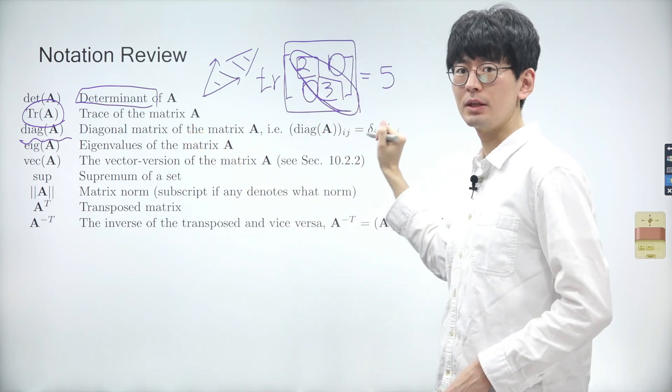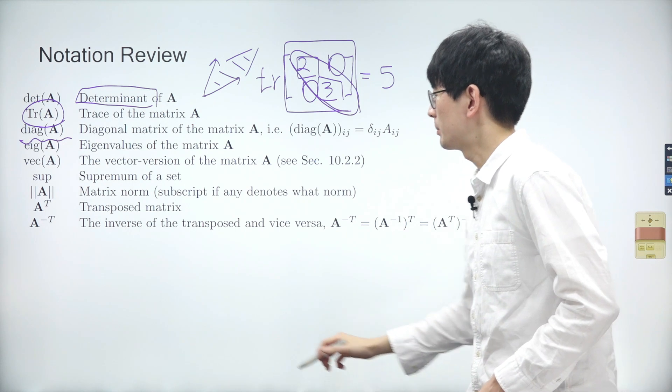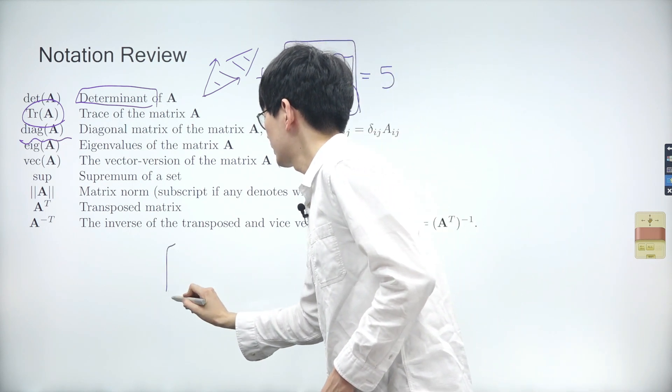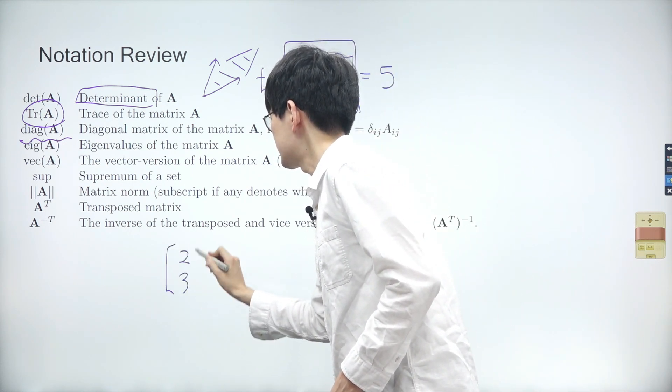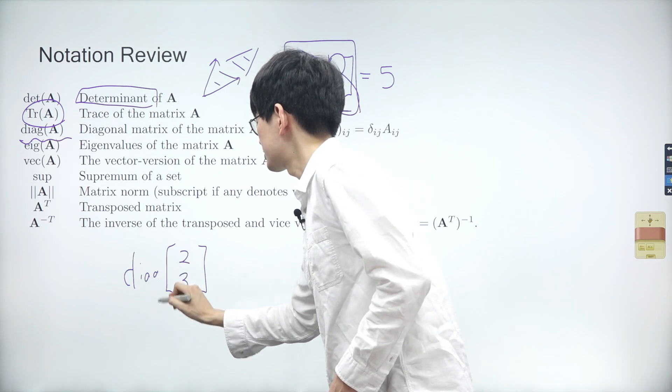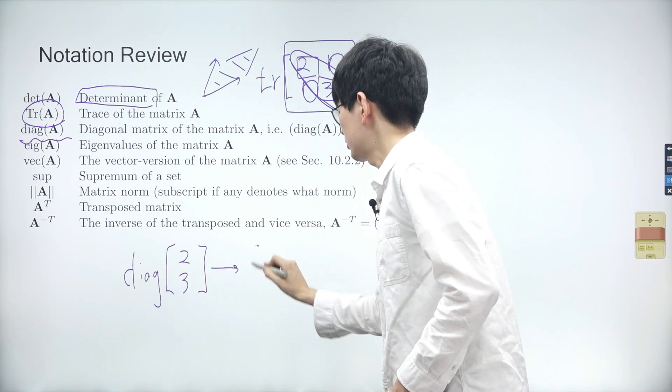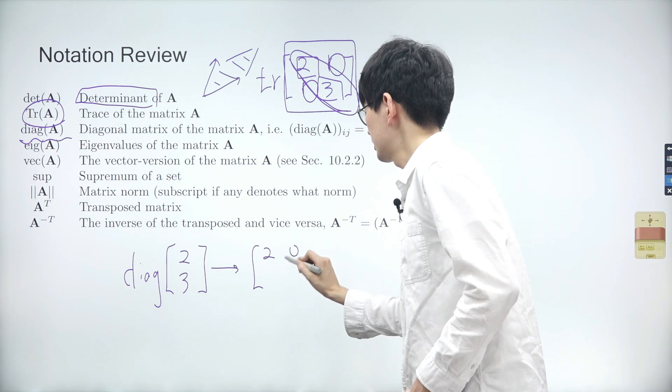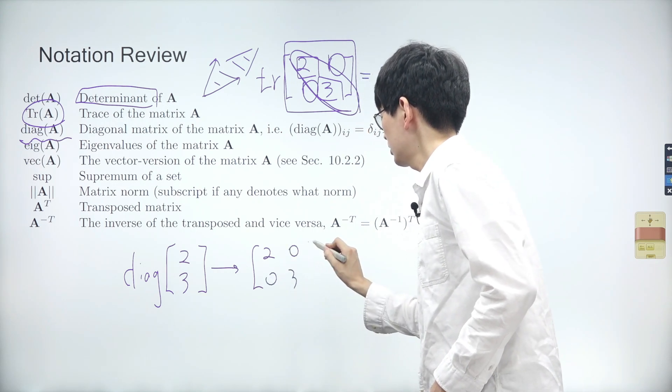Conversely, suppose we have a vector with elements 2 and 3. The diagonal matrix of this vector is a matrix where the diagonal elements are the elements of the vector and zeros for all other elements.